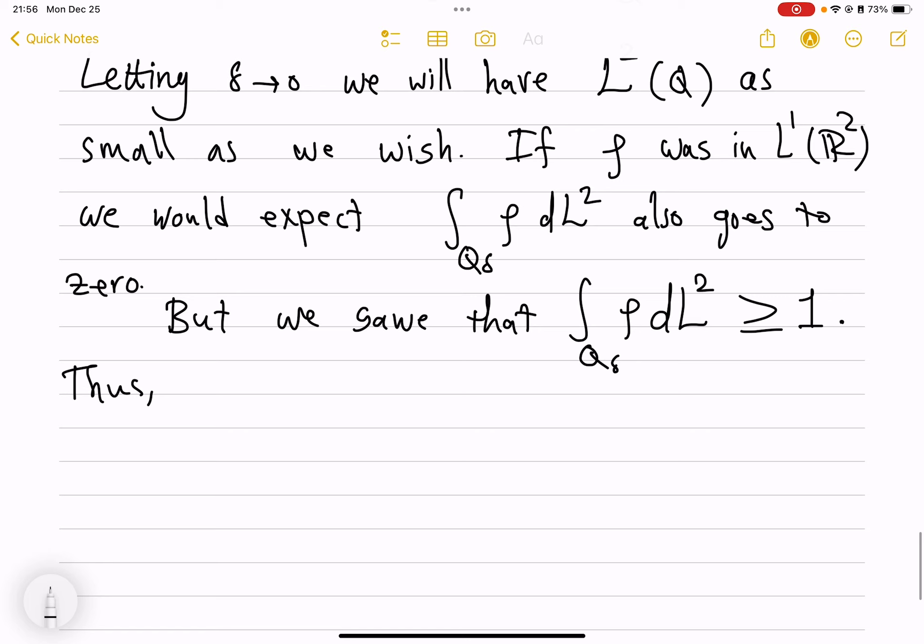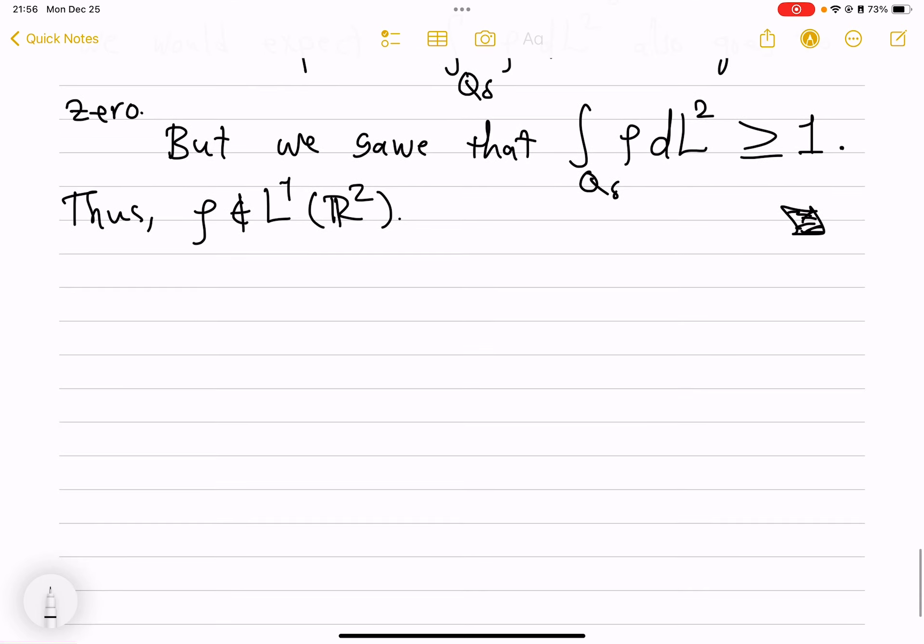Thus, rho is not in L1 of R2. End of the story. So, even for p equal 1, that function is not in the Sobolev class.